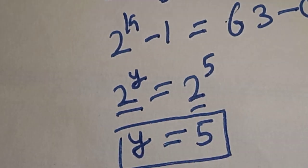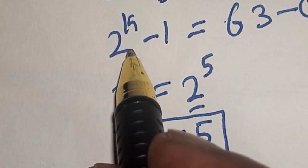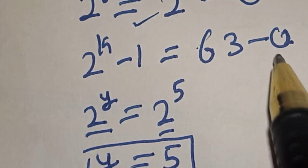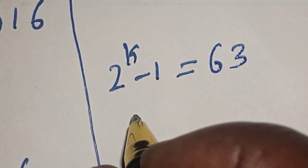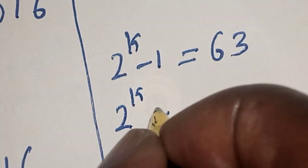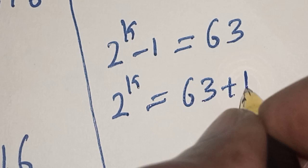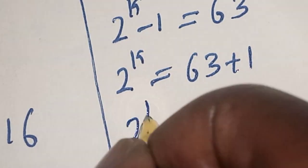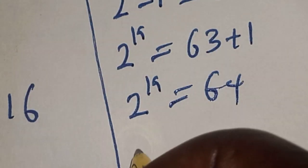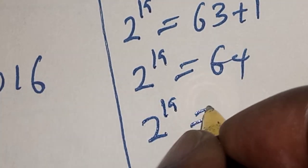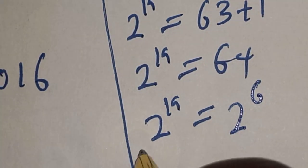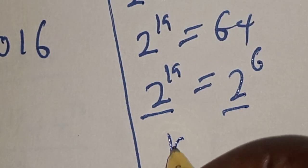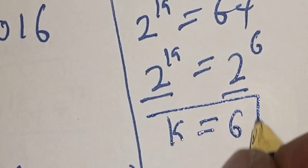Now for equation 2: 2 raised to power K minus 1 equals 63. Therefore 2 raised to power K equals 63 plus 1, which is 64. And 2 raised to power K equals 64, which is 2 raised to power 6. Since they have the same base, K equals 6. That is the value of K.